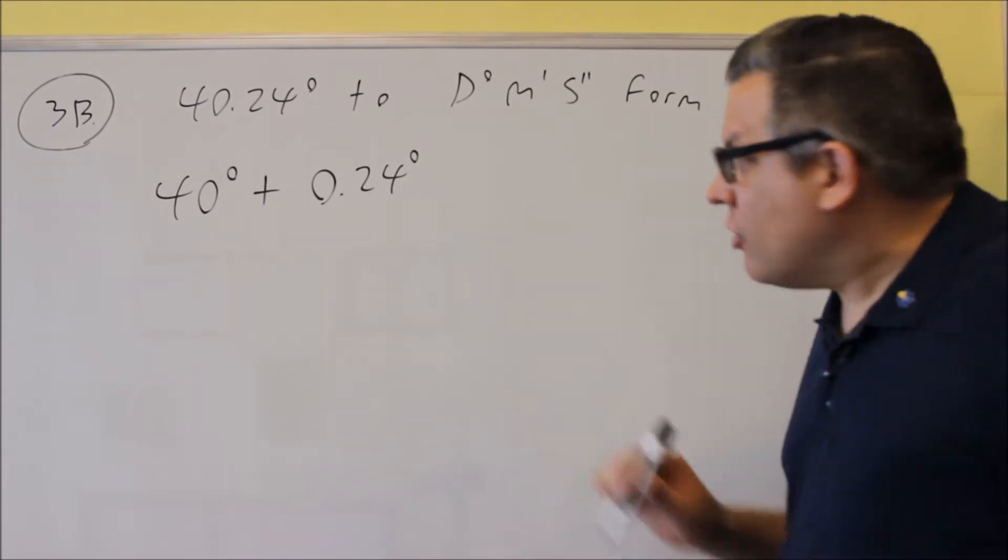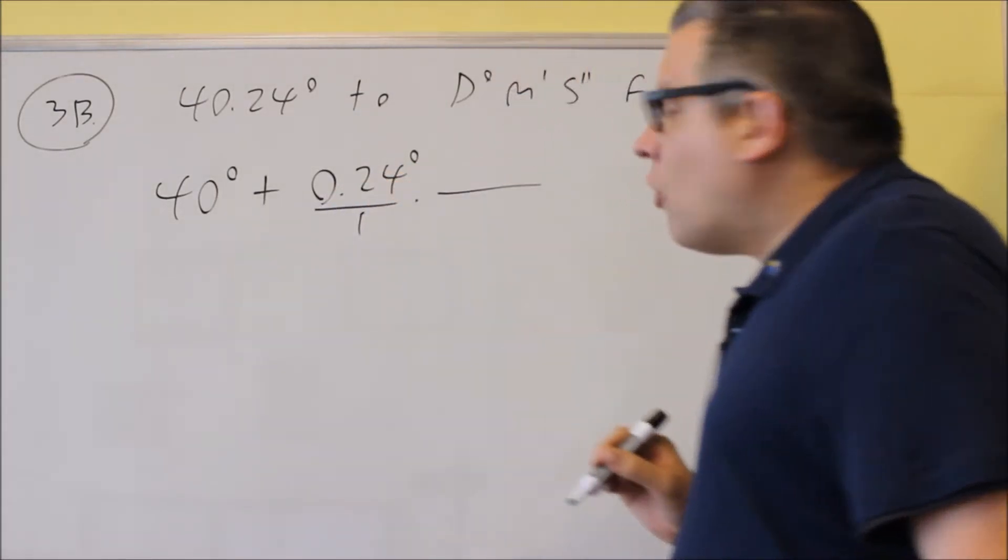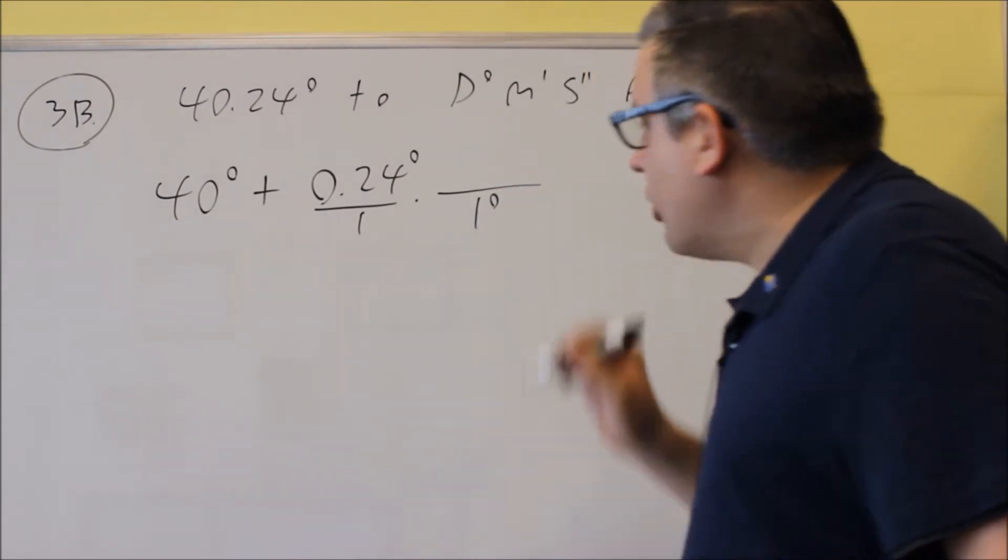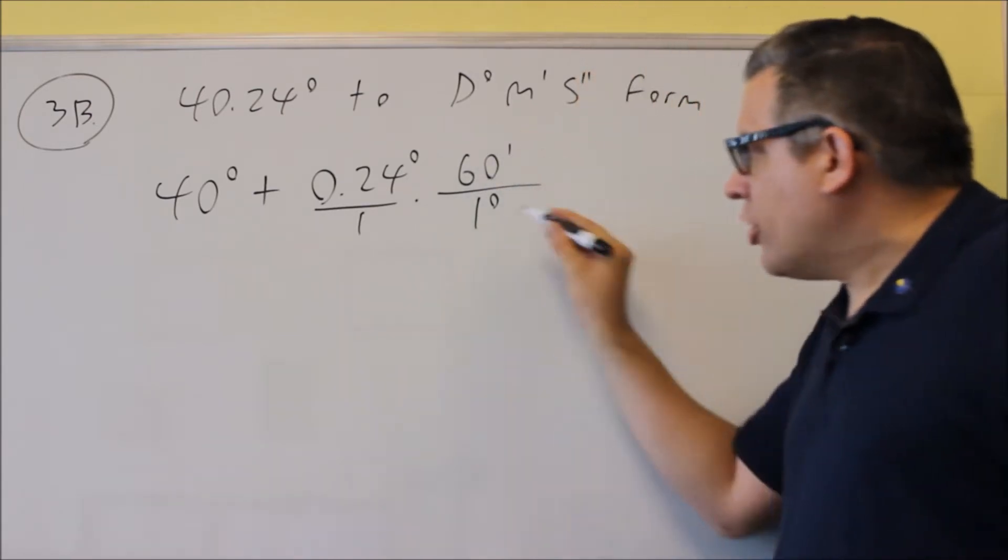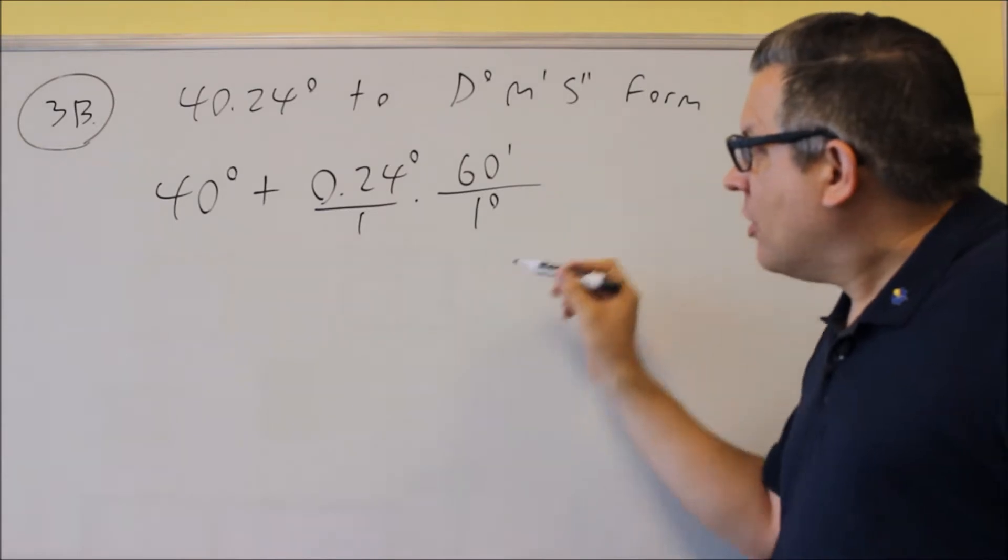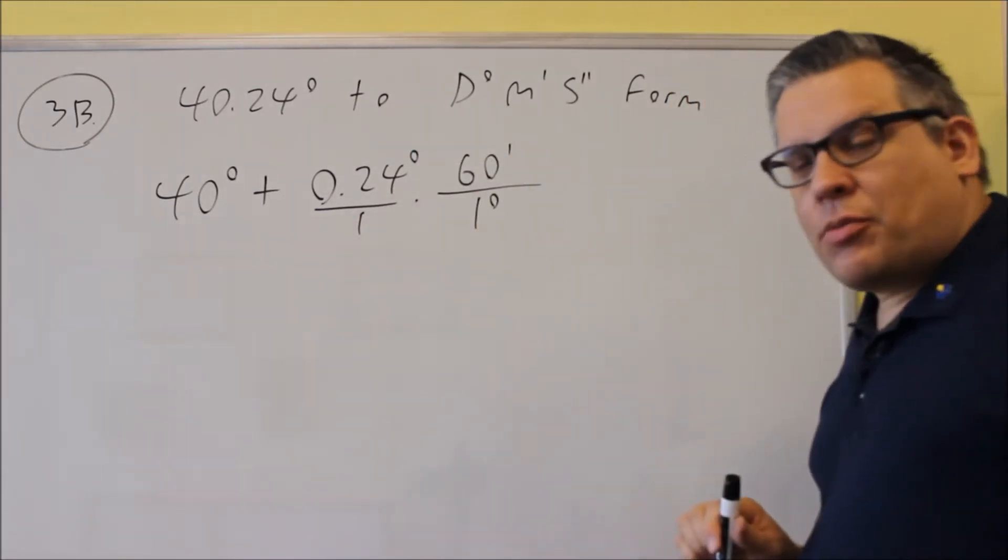The conversion factor that we're going to use here is, this is over 1, we want the degree this time to be on the bottom. So I'm going to put 1 degree down below there. And the conversion is 1 degree is the same thing as 60 minutes, but we're putting the minutes on top this time because we want the degrees to cancel out. So that's our first step.